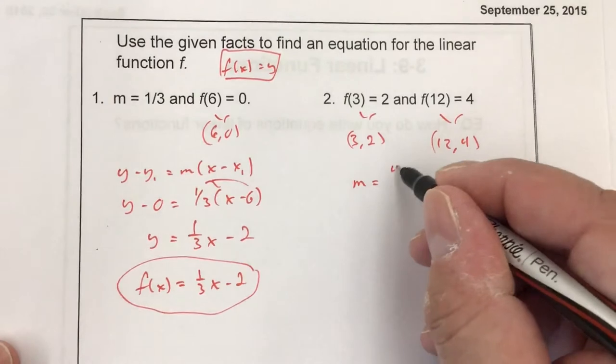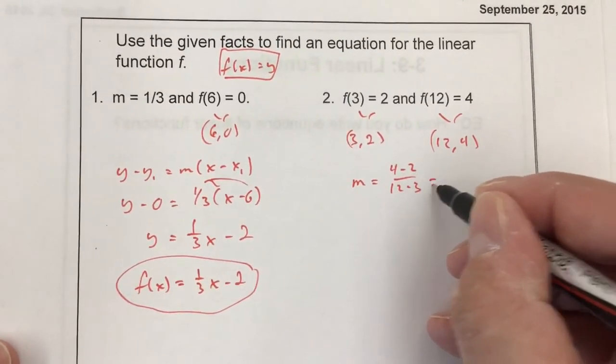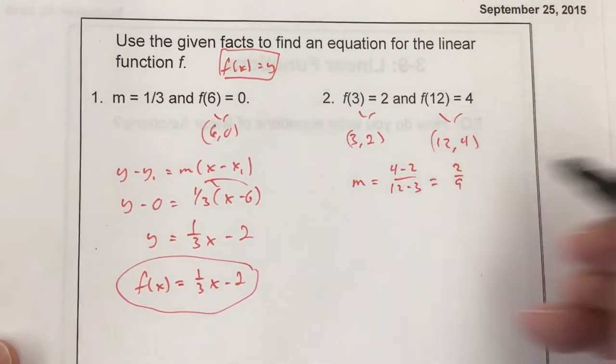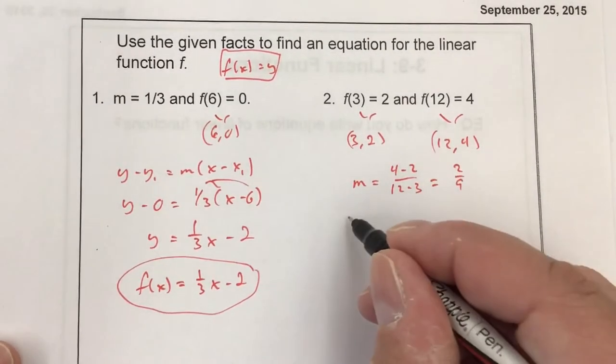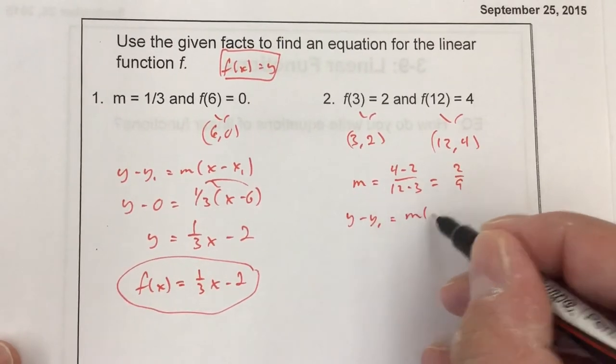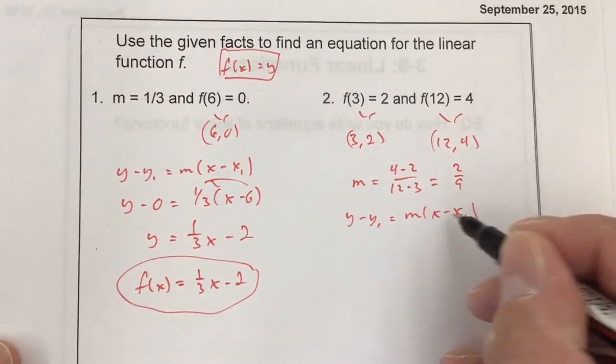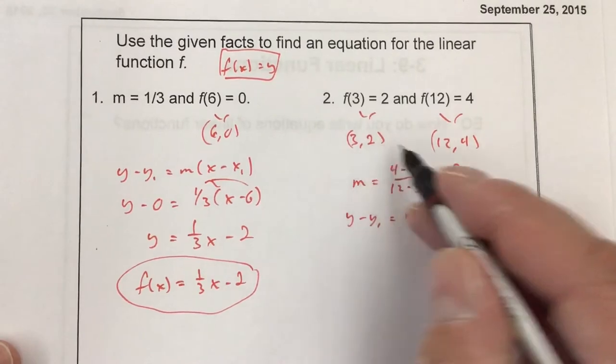4 minus 2 over 12 minus 3 gives me 2 over 9. Then I pick one of the points. Again, we're going to plug into point-slope form.